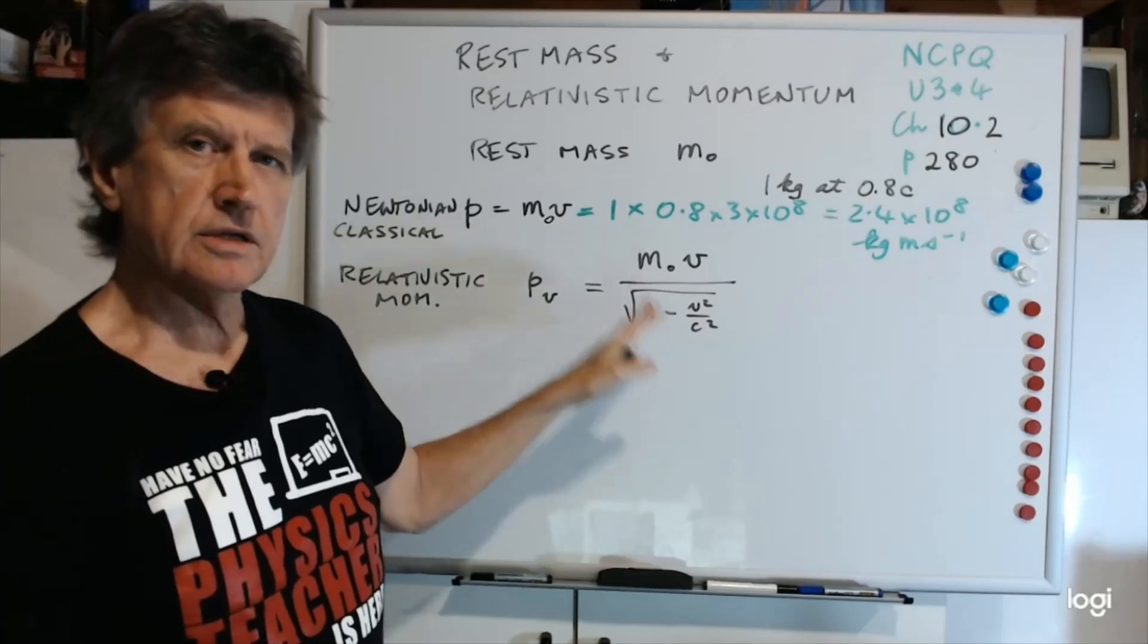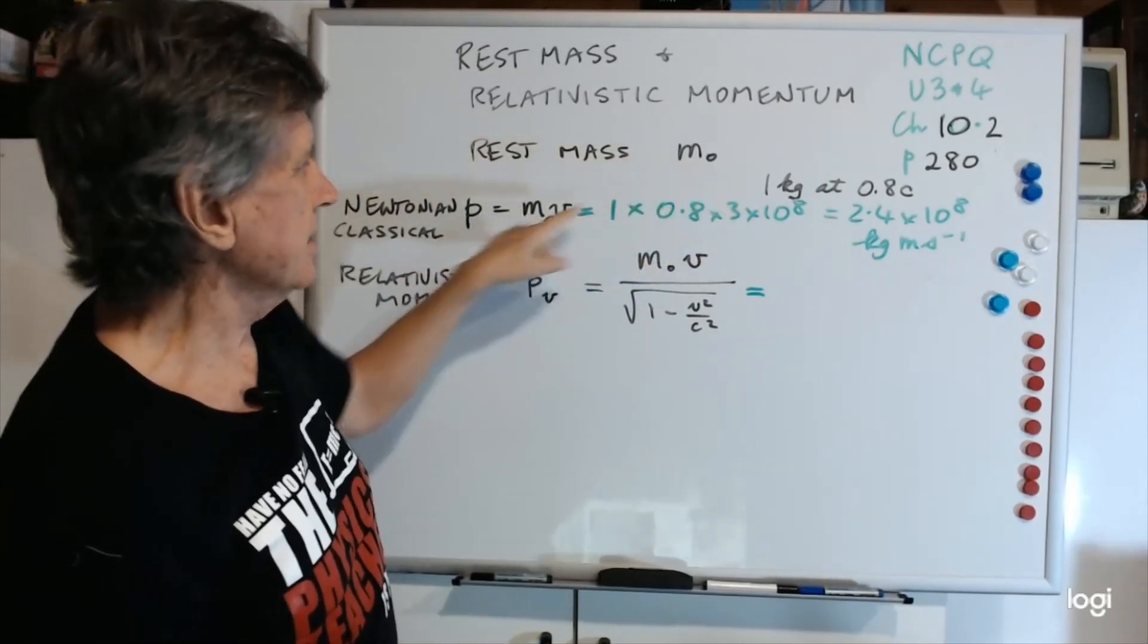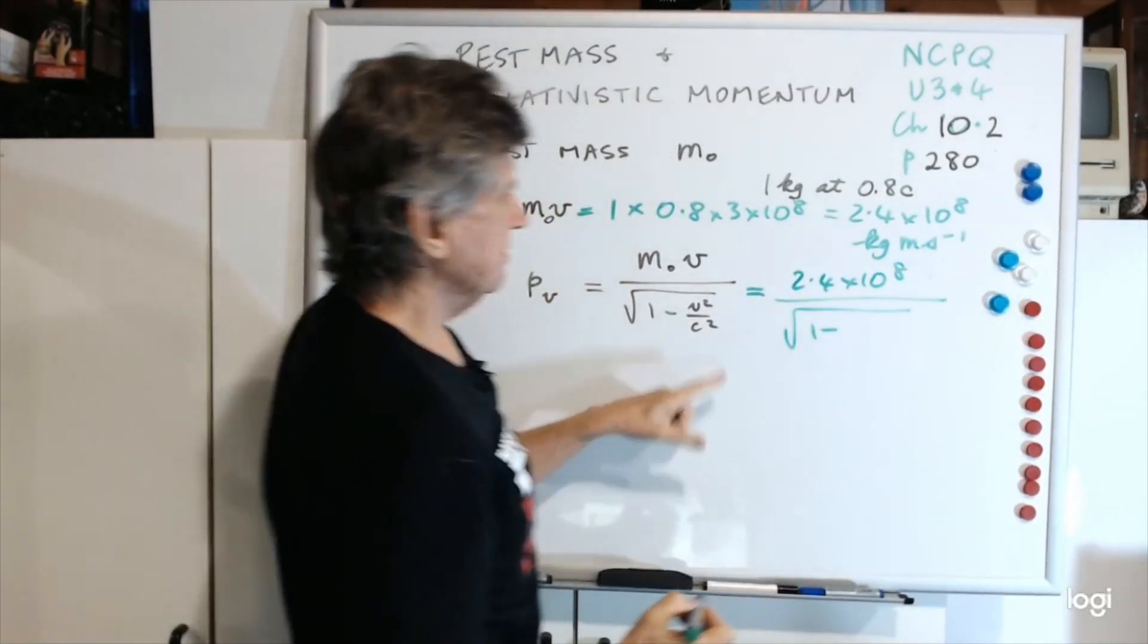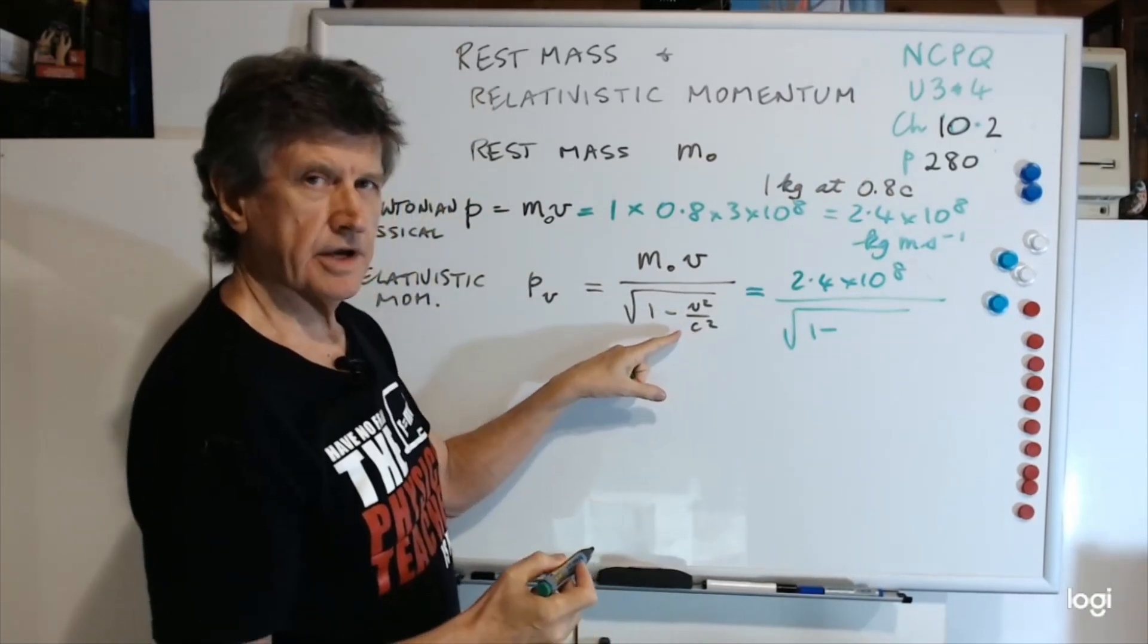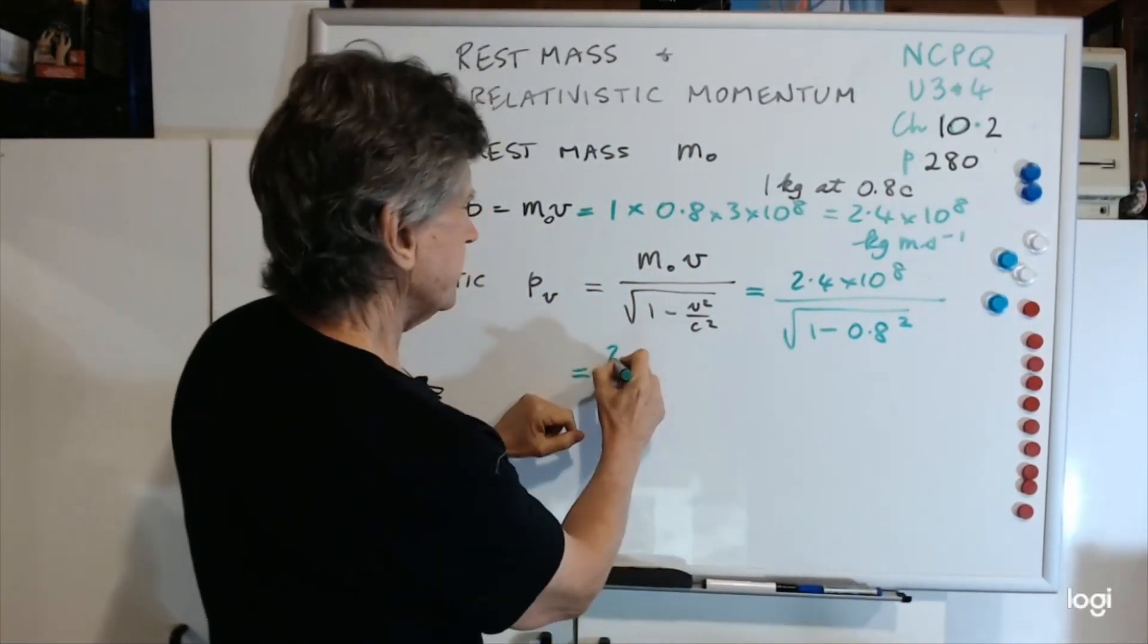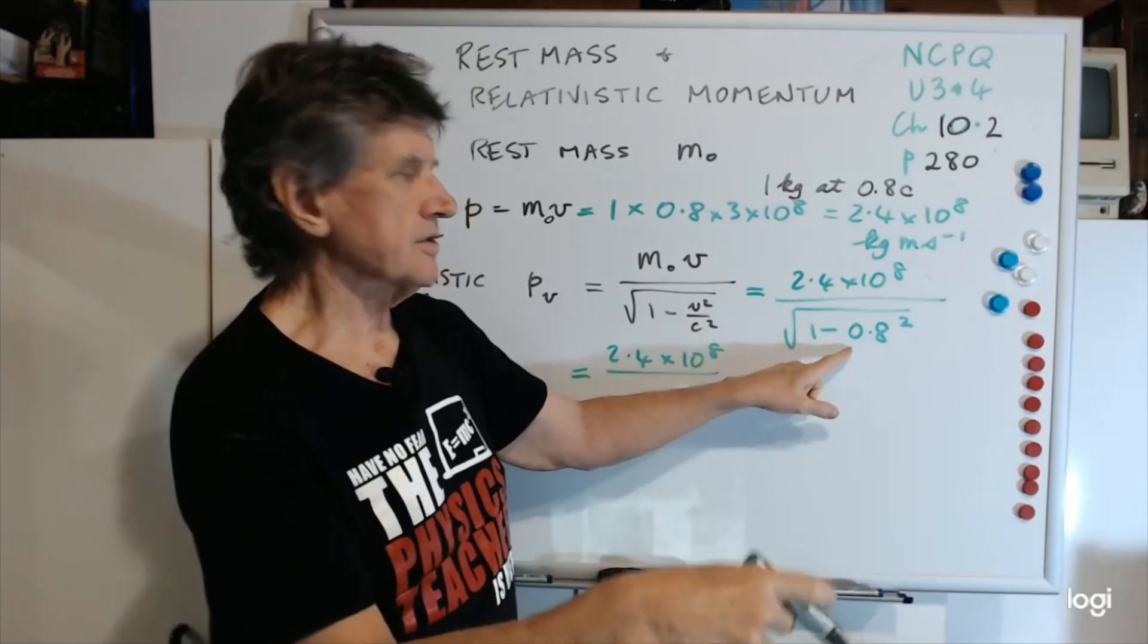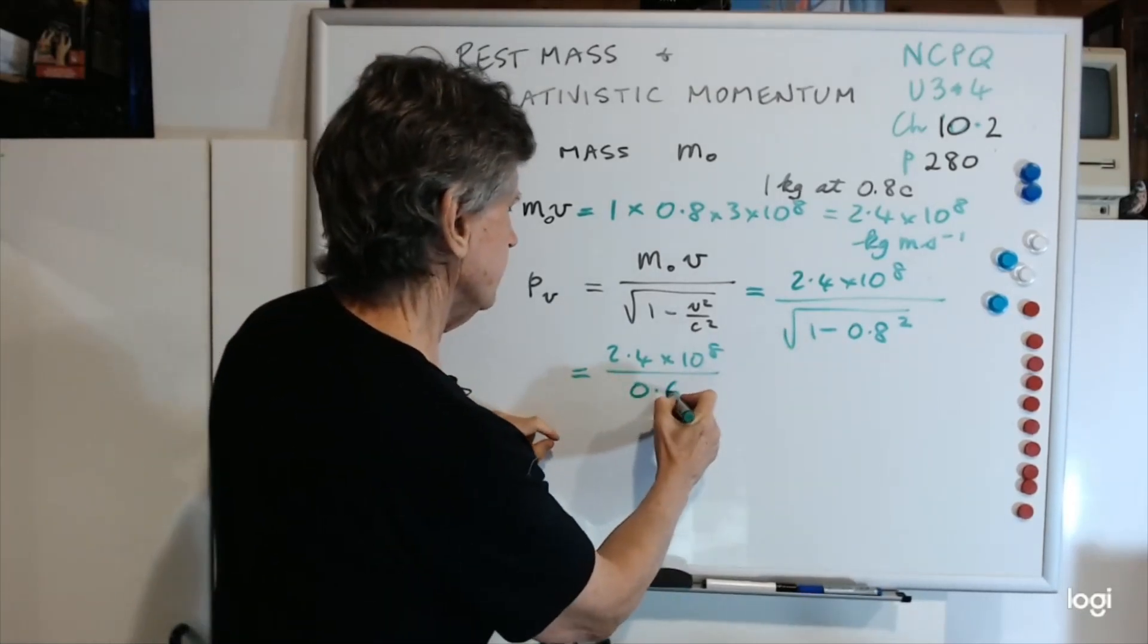Now let's see what we get for this. I'll cut a few corners here. m0v, we've already done that, we know it's 2.4 by 10 to the 8 divided by this thing here. That's 1 minus v squared is 0.8. Remember I said when it's in units of c, you can leave out the c squared there and just make it 0.8 squared. That comes down to 2.4 by 10 to the 8 divided by, 0.8 squared is 0.64. 1 minus 0.64 is 0.36, the square root of that is 0.6, so that comes down to 0.6.